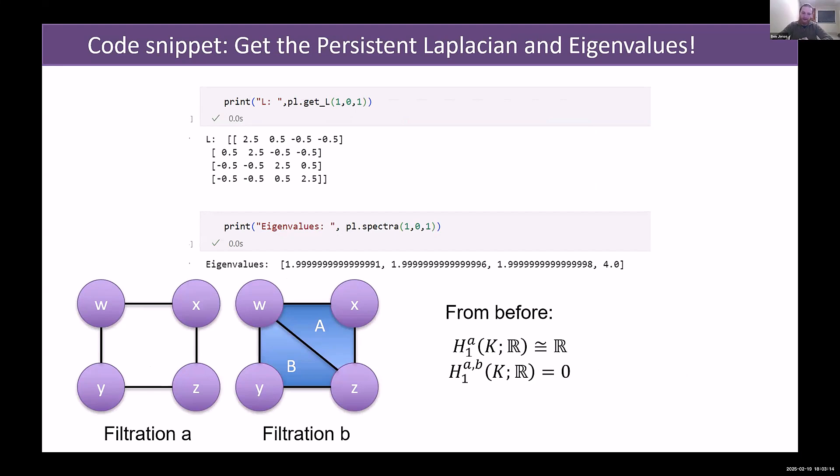We knew before that at filtration level A there was homology, and then at filtration B it disappeared. And that says that the persistent homology was zero. But our eigenvalues also tell us that, because there is no zero eigenvalue. Instead, the non-zero eigenvalues can be used for other applications like the topological spectral clustering or predicting viral properties.